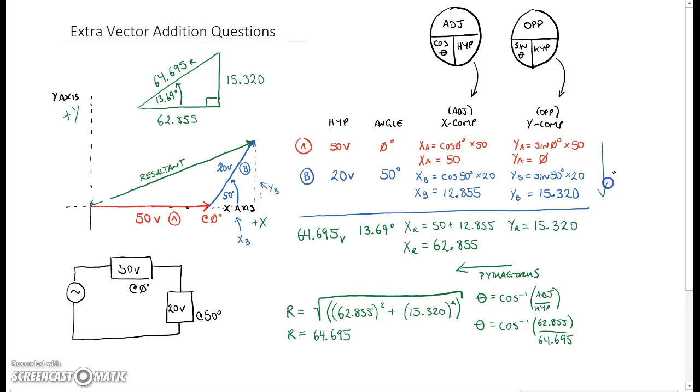Okay, at this point what we need to do is we need to add them up. So going down here, we have found the x component and the y component for this larger green triangle here. Okay, so at this point we need to just add up the 50 volts and the 12.855. So 50 plus 12.855 gives us 62.855, and what I've done is I've just redrawn that green triangle above, and so the x component is 62.855. The opposite, well there's nothing here for the first vector, this value right here is 15.320, so 0 plus 15.320 gives us 15.320 for the opposite.